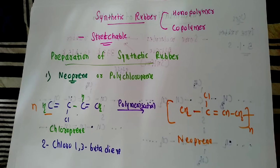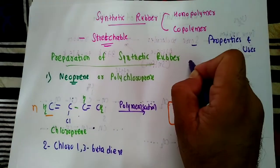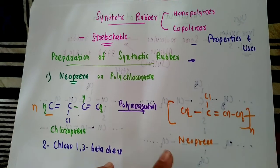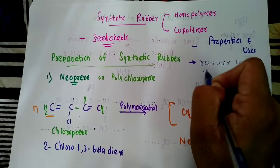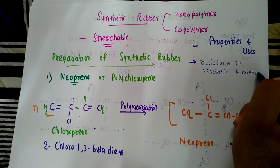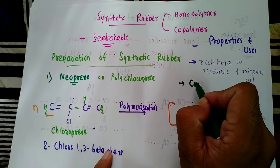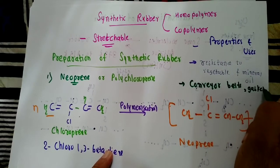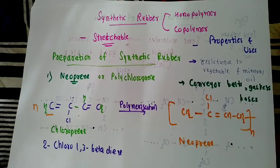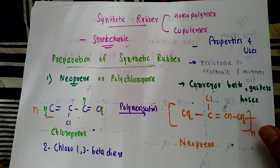Properties and uses of neoprene: its main property is that it is resistant to vegetable and mineral oil. Its uses include manufacture of conveyor belts, gaskets, and hoses. Neoprene is resistant to vegetable and mineral oil and is used for preparation of conveyor belts, gaskets, and hoses.